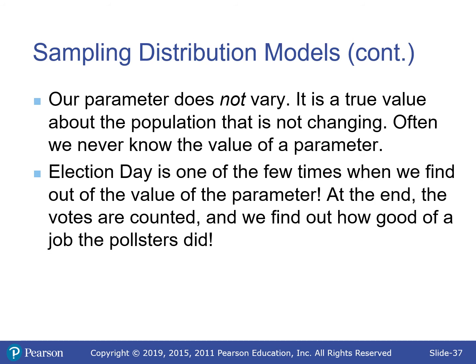The parameter could change over time — the average height of Americans now versus 200 years ago might differ — but at any given point in time there is a true fixed value. Election day is one of the few times we actually find out the value of the parameter — votes are counted and we see how good the pollsters were. Same with the census: we find out what all these values actually are.